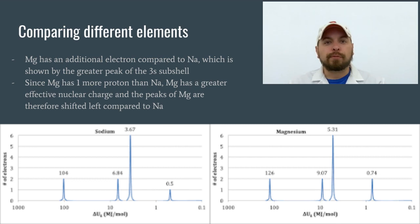So how would this differ if we changed the atom? Here I've got sodium, which we just looked at, but now I'm going to compare it to magnesium, which is the next element on the periodic table. The difference between sodium and magnesium comes down to two things. One, the number of protons. Magnesium has one extra proton. Secondly, the number of electrons. Magnesium as an atom also has one more electron.